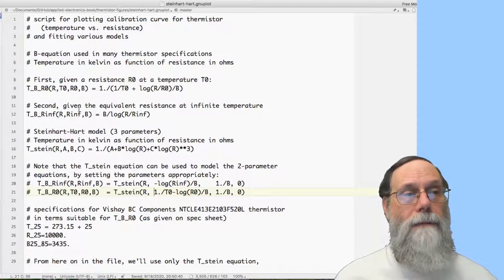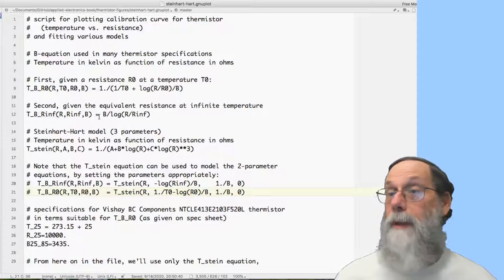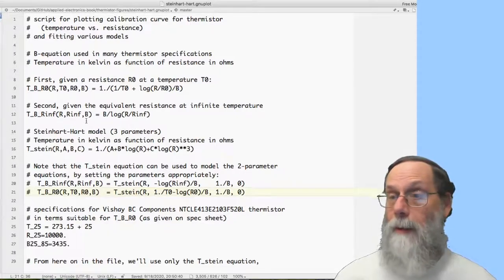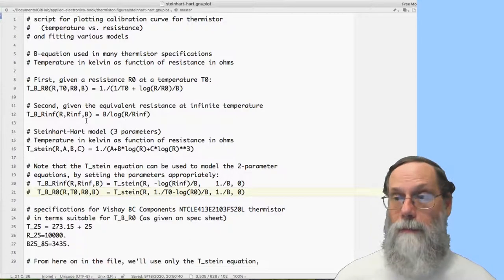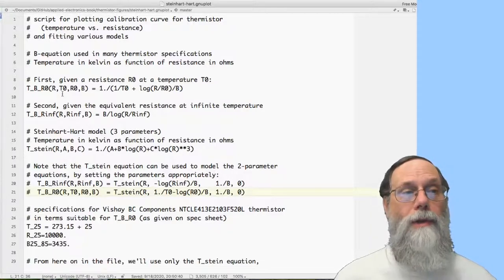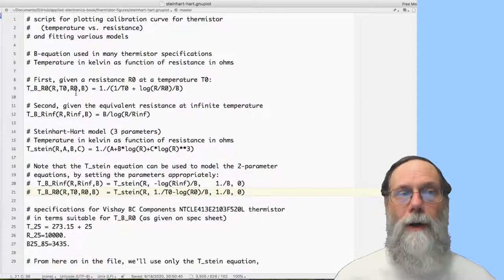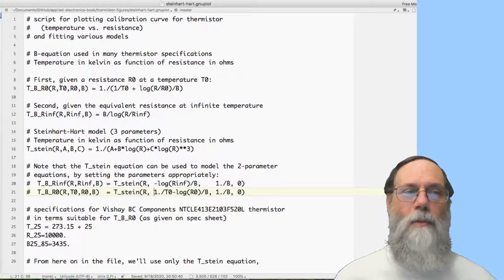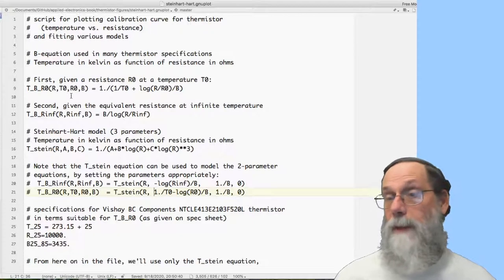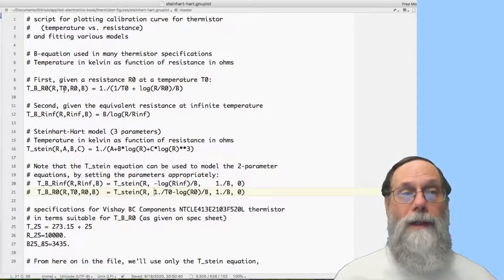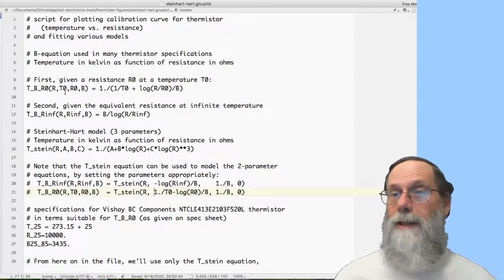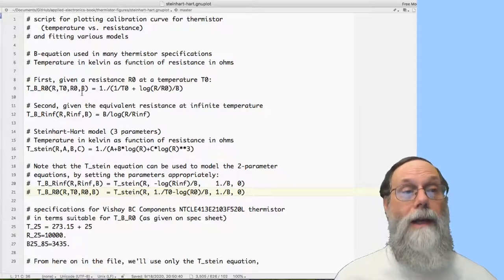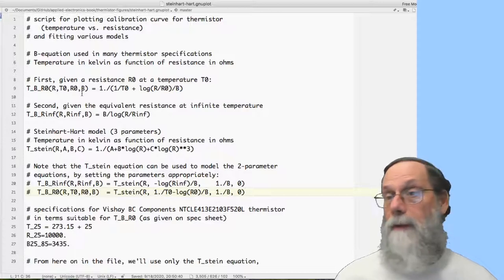And I gave two different formulas for the B equation. One of them uses the R infinity and B parameterization, which I explained in the book. The other one uses the T0 and R0 instead of R infinity. And that's the more commonly used one for data sheet specifications. They usually give what the resistance is at some particular temperature, often 25 degrees C, and then a B value.